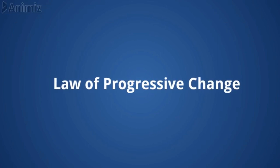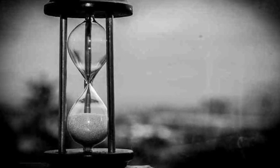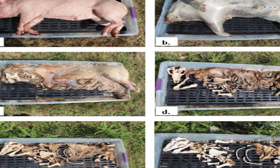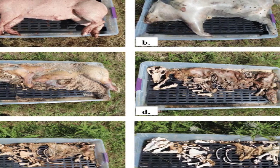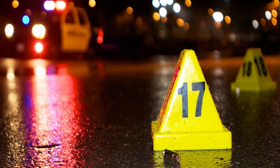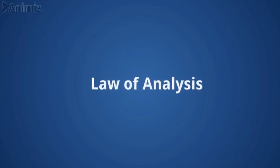3. Law of Progressive Change — this law states that nothing is permanent, unchangeable, or invariable. It describes that the scene of crime is always changing with time. Therefore, more the delay in examining the crime scene, the greater will be the loss to the crime scene and potential evidence present there. For example, if a crime took place in an open environment, the potential evidence may get damaged during rain if not collected in time.